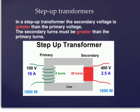There are two types of transformers: step-up and step-down transformers. Here is a diagram of a step-up transformer. In the step-up transformer, the secondary voltage is greater than the primary voltage. So 400 volts here is greater than 100 volts there. And the secondary turns must be greater than the primary turns. Here we have 20 turns, here we have 5 turns. That is greater than that.